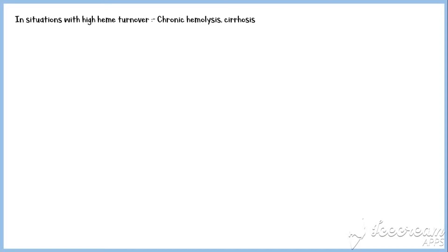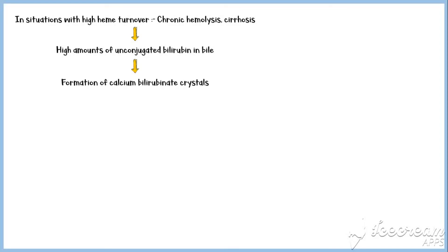In conditions with high heme turnover, such as chronic hemolysis and cirrhosis, high amounts of unconjugated bilirubin are excreted in bile, which enhances their precipitation along with calcium, leading to the formation of calcium bilirubinate crystals. These crystals aggregate and form gallstones. Over time, various oxidation processes cause these stones to take a black color. Stones formed in this manner are called black pigment gallstones.